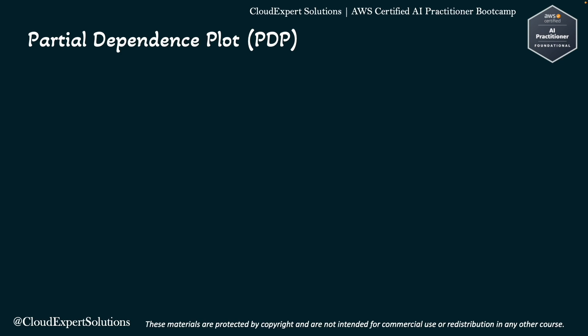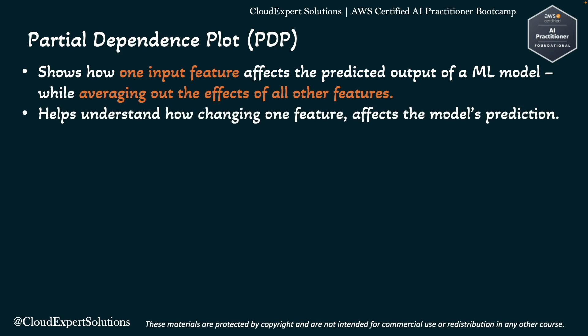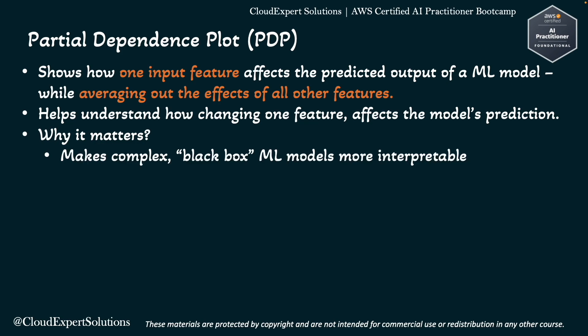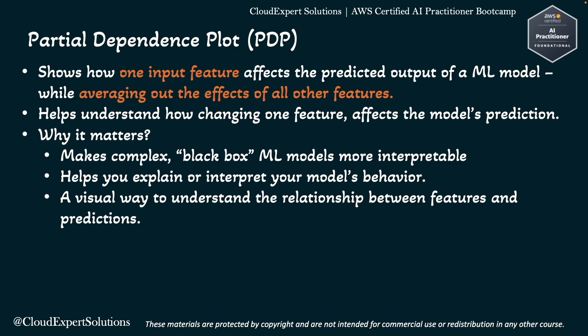Now let's understand model explainability and review Partial Dependence Plot. A Partial Dependence Plot shows how one input feature affects the predicted output of a machine learning model, while averaging out the effect of all other features. It helps you understand: if you only change this one feature, how will the model's prediction change? PDP aims to make complex, black-box machine learning models like neural networks more interpretable. It helps explain model behavior in critical domains like lending, healthcare, or insurance, and provides a visual way to understand the relationship between features and predictions.